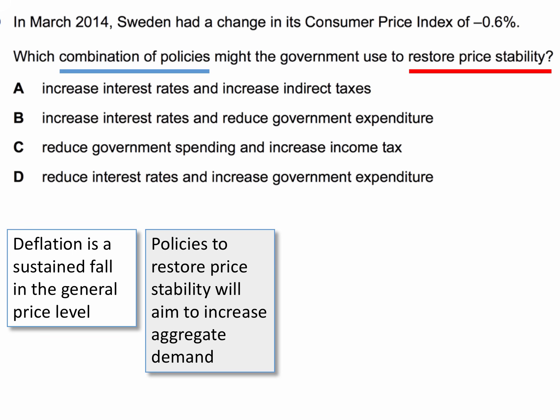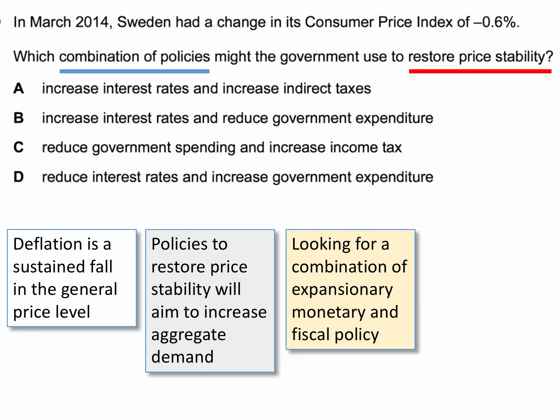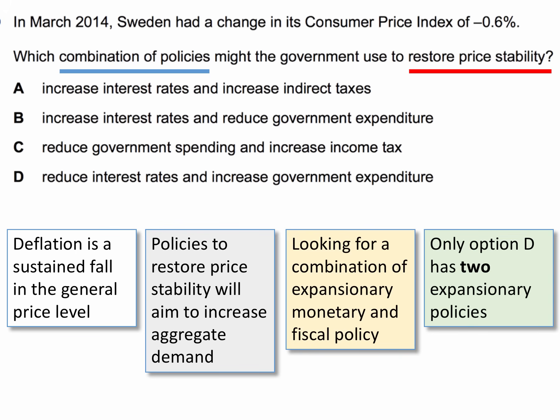We're looking for expansionary policies. The best answer will be a combination of expansionary monetary and expansionary fiscal policy. Only option D contains two expansionary policies: to cut interest rates and to increase government spending.